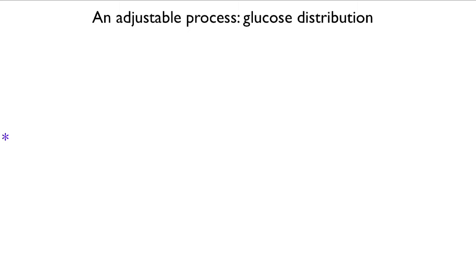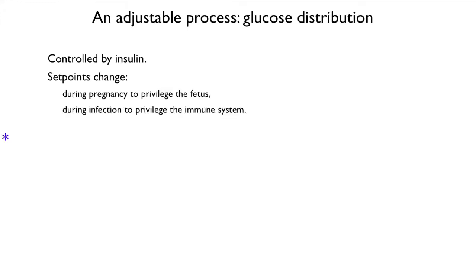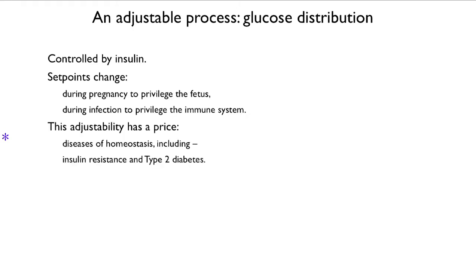Here is an example of an adjustable process: glucose distribution in the body, controlled by insulin. The set points for insulin level and insulin sensitivity change during pregnancy to give privilege to the fetus, and during infection to give privilege to the immune system — so each can get more glucose because they need more energy. That has a price, and the diseases of homeostasis include insulin resistance and type 2 diabetes.